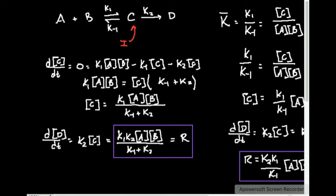In the previous video, this stuff over here on the left side is what we did before — that was using something called the steady state approximation. We actually did steady state approximation for this reaction up here, and we derived a rate law. The rate of the reaction is equal to k1 times k2 times the concentration of A times the concentration of B, divided by k-minus-1 plus k2.